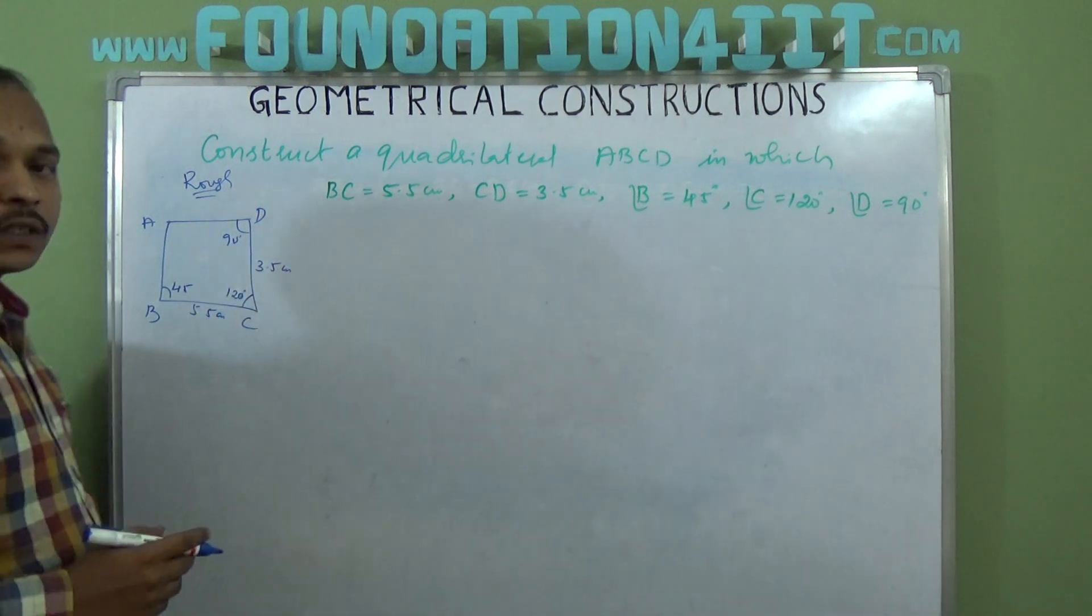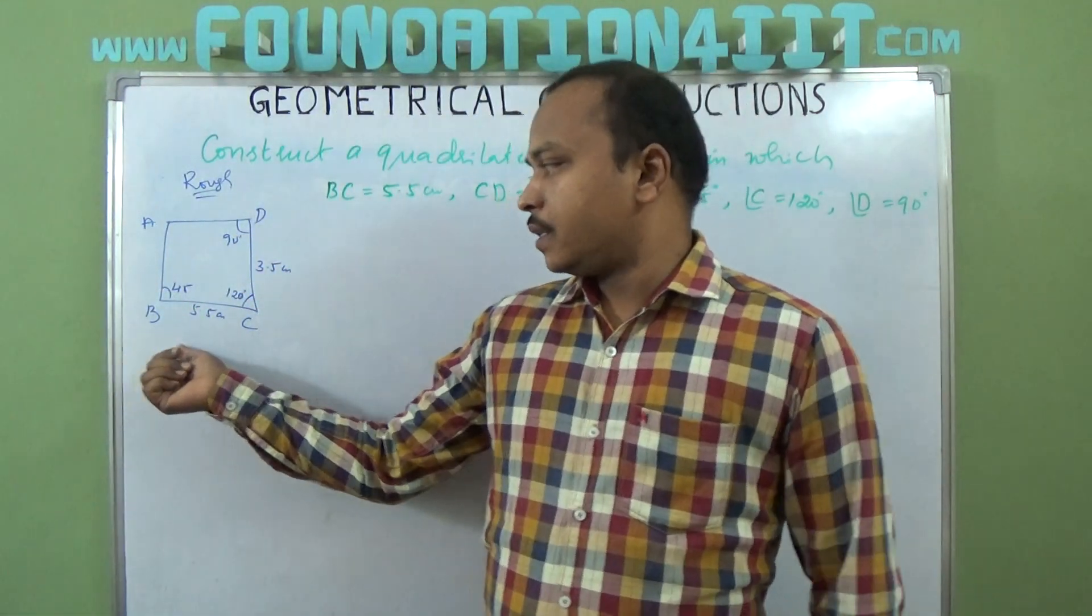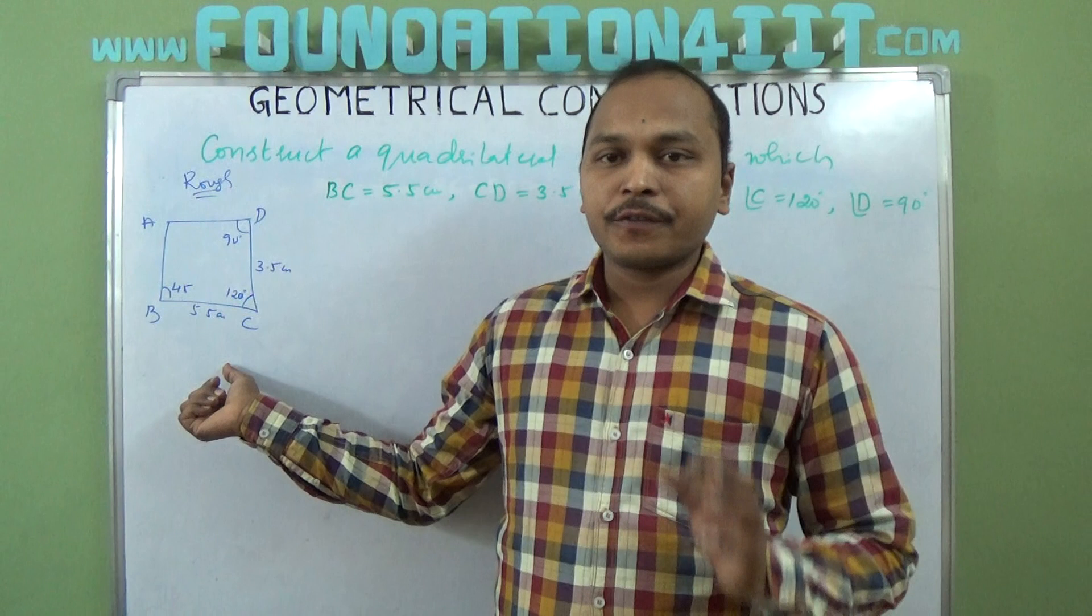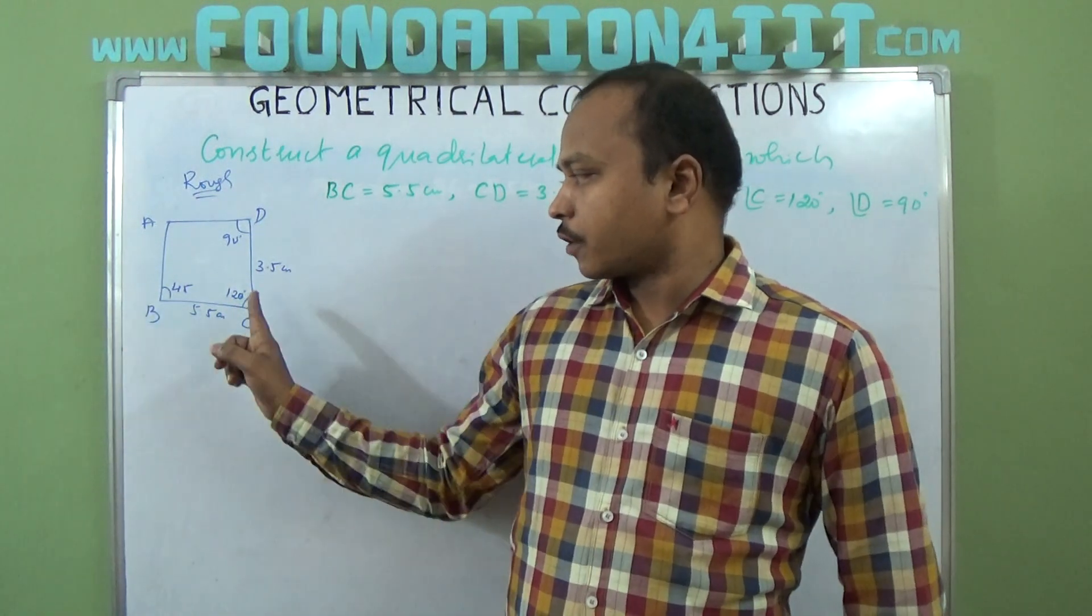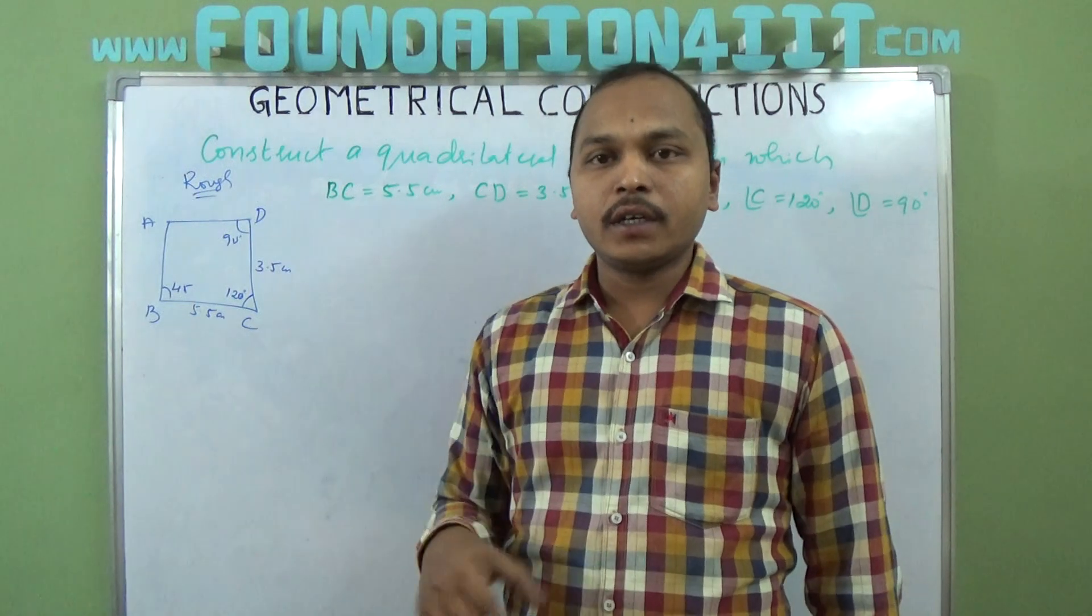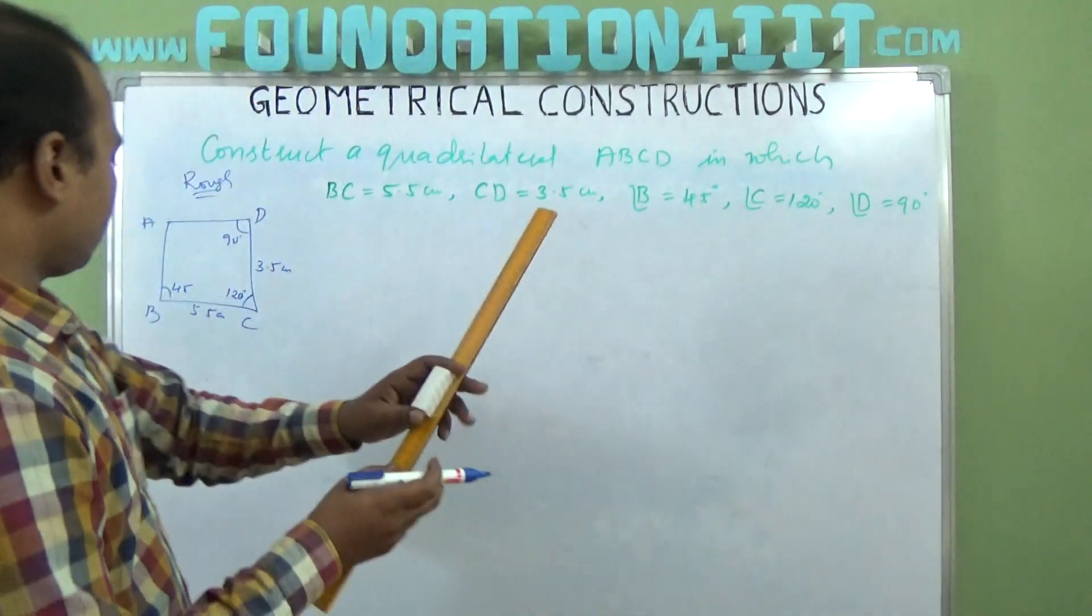This information is enough. You can construct the quadrilateral. First, BC base 5.5 centimeters line segment will draw first. Then angle B 45° and angle C 120° will construct. So first we'll take the line segment BC.